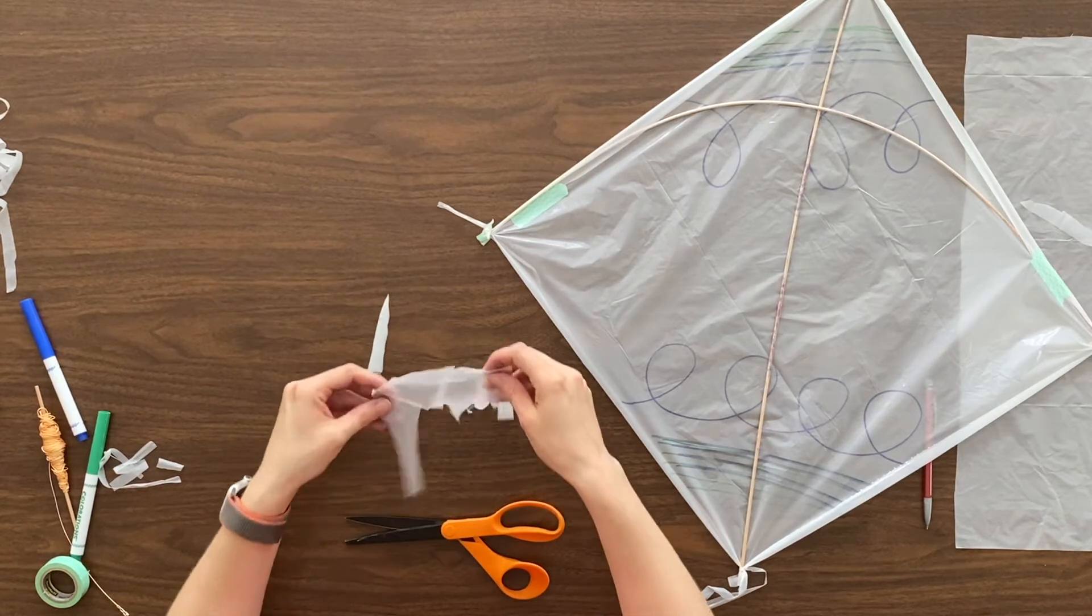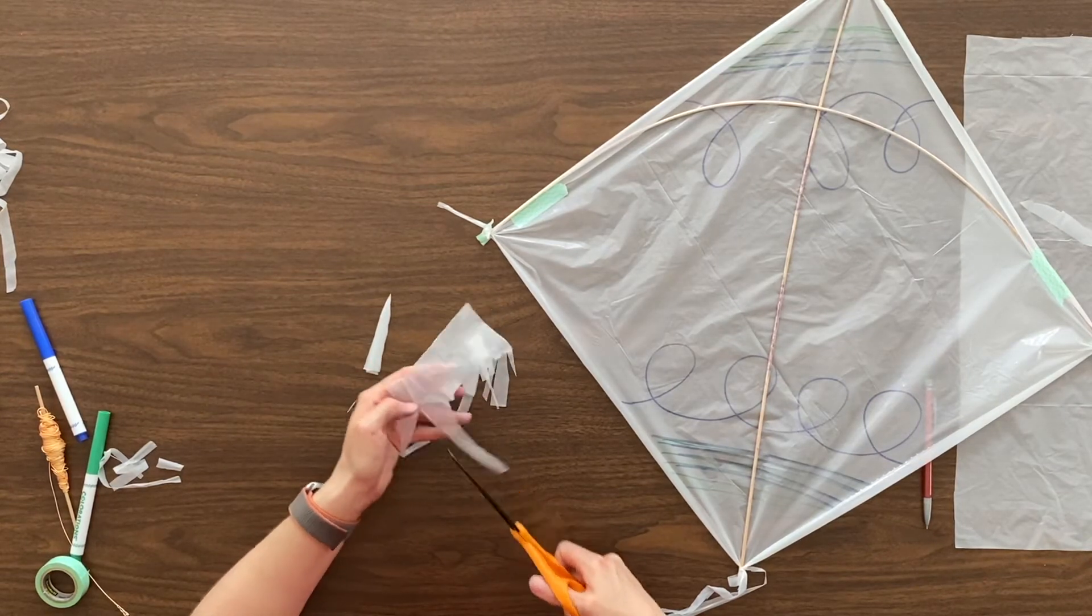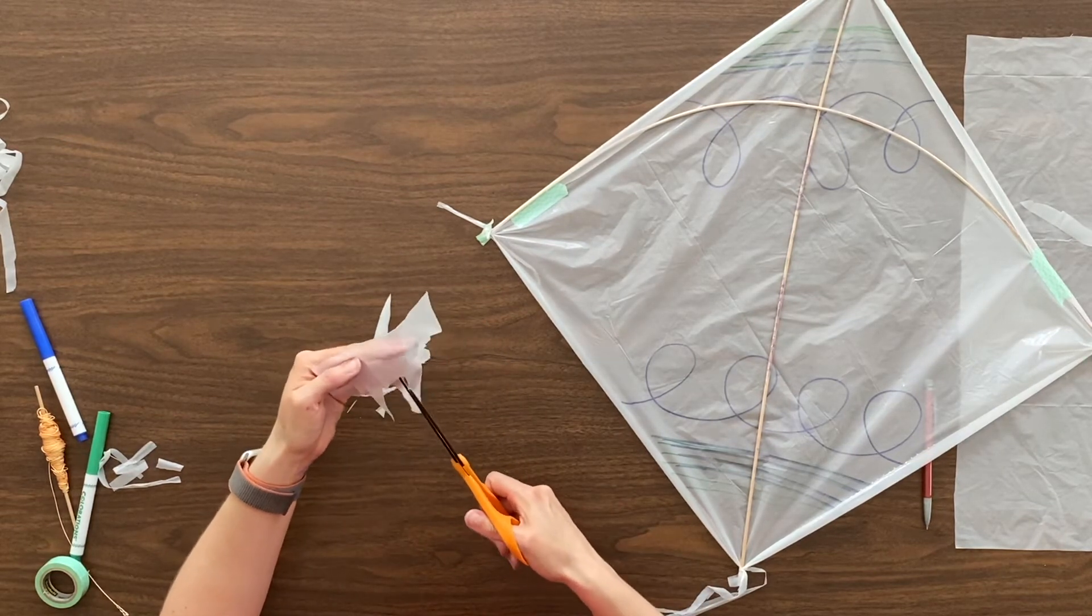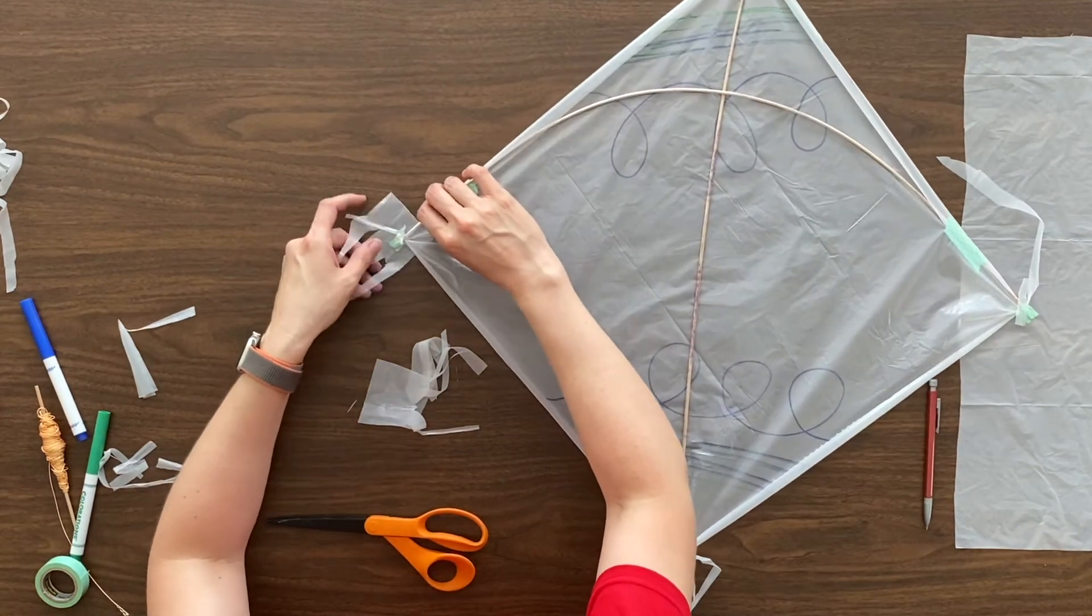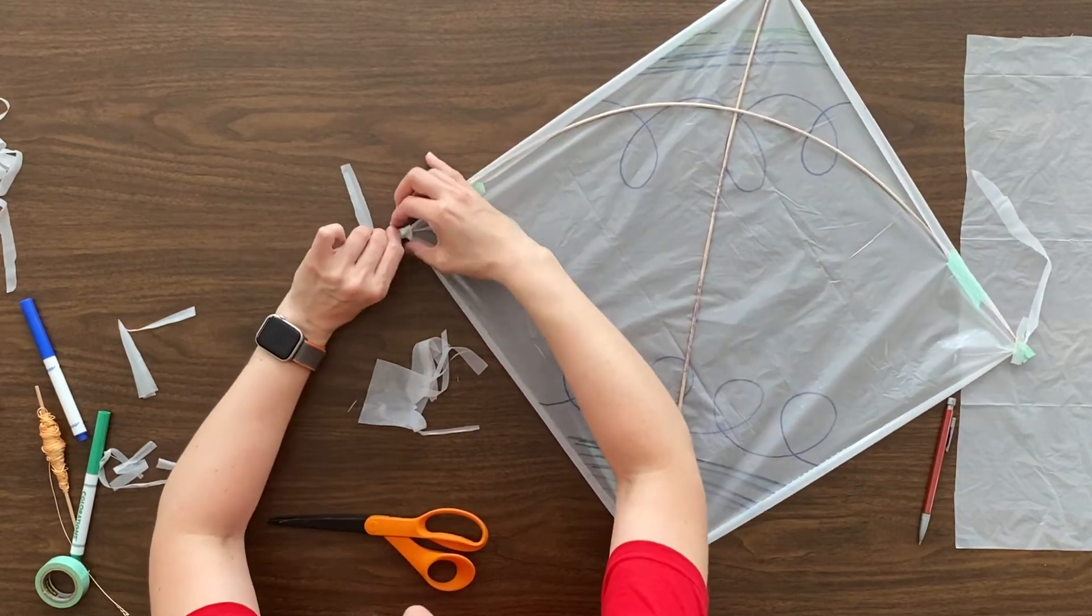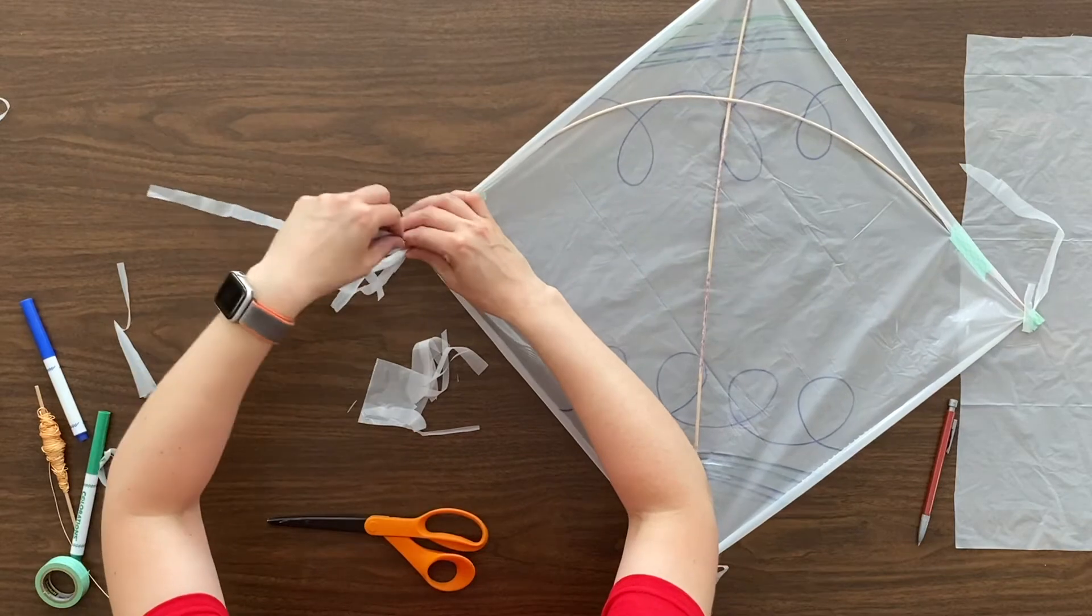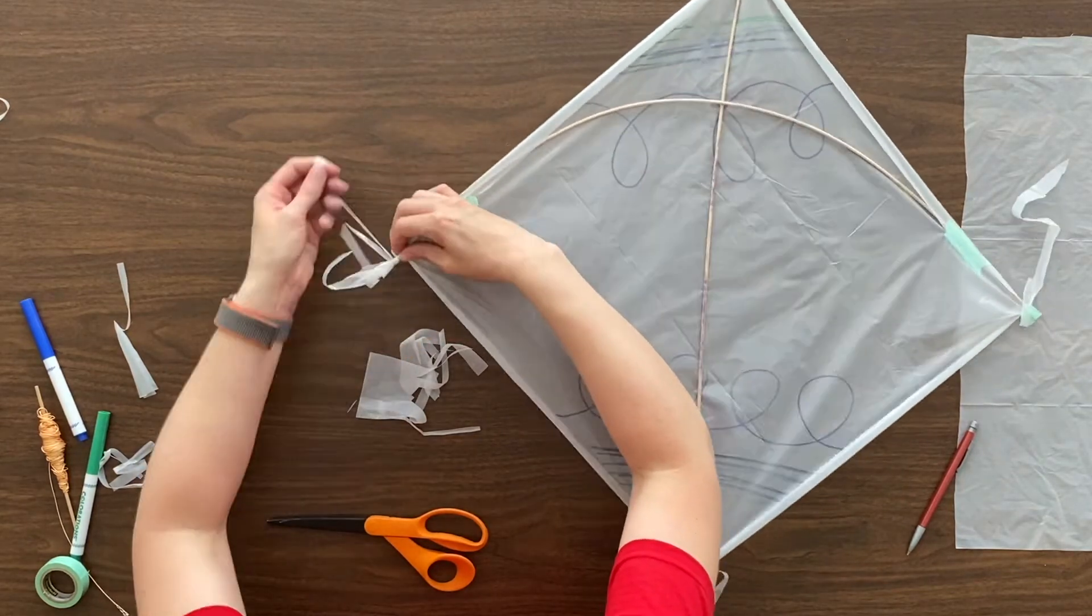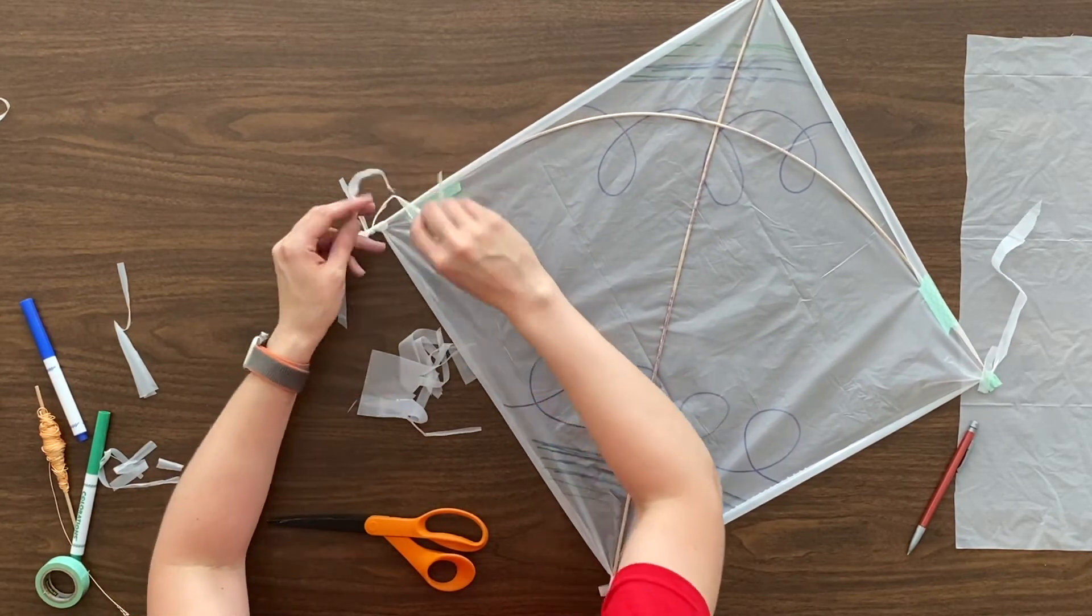Unroll it, and I'm going to cut this in half. And one fringe I'm going to put on one side of the kite. I'm just going to roll it up, and I'm going to tie it with some more plastic. Tie it in a knot.